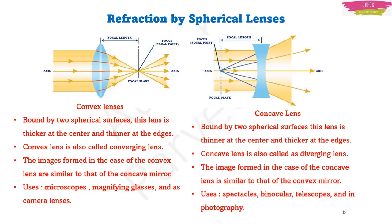In the same manner as convex mirrors, a concave lens diverges light after refraction. It is made of two spherical surfaces joined together, thin in the center and thicker at the edges. The image formed is the same as that in a convex mirror. A concave lens is used in spectacles, binoculars, telescopes, and photography.